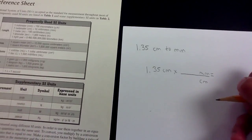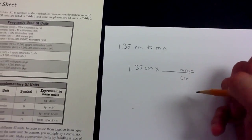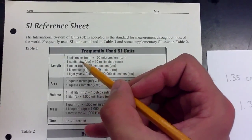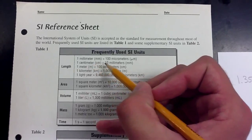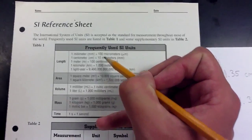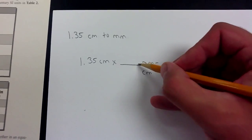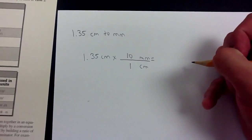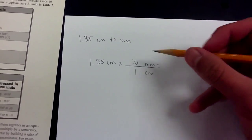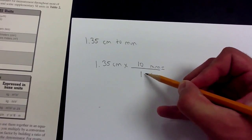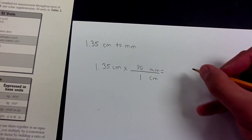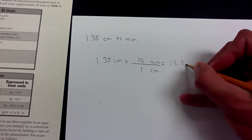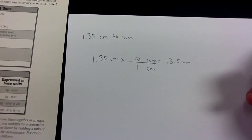Next, look on the conversion chart and find a conversion between millimeters and centimeters. Looking at the length section, you'll see that 1 centimeter equals 10 millimeters. So I go back to the problem: 1 centimeter equals 10 millimeters. Now all I do is the math: 1.35 times 10 divided by 1, and that gives me 13.5 millimeters. And that's how you do the first one.